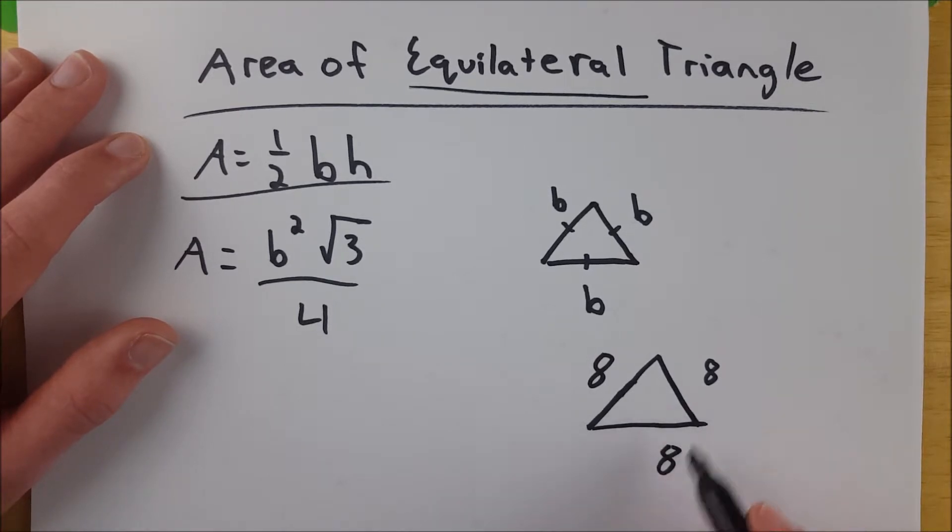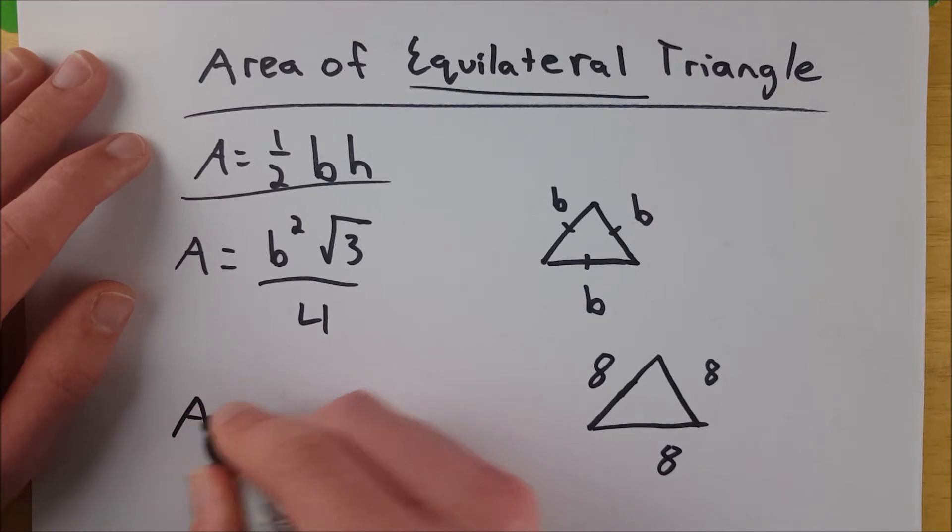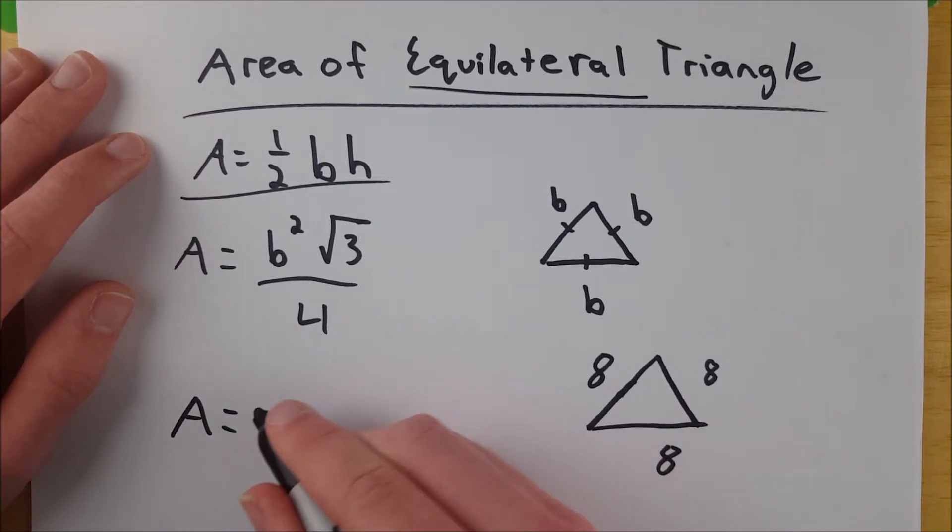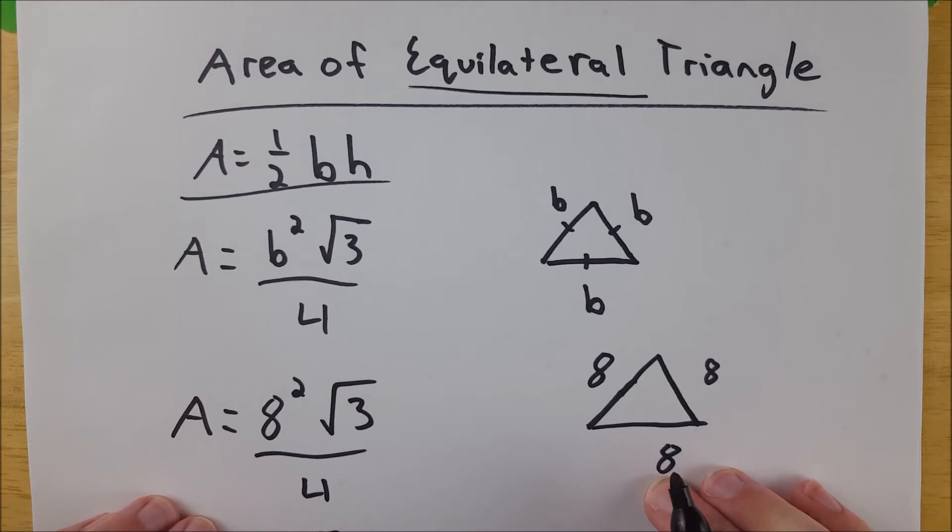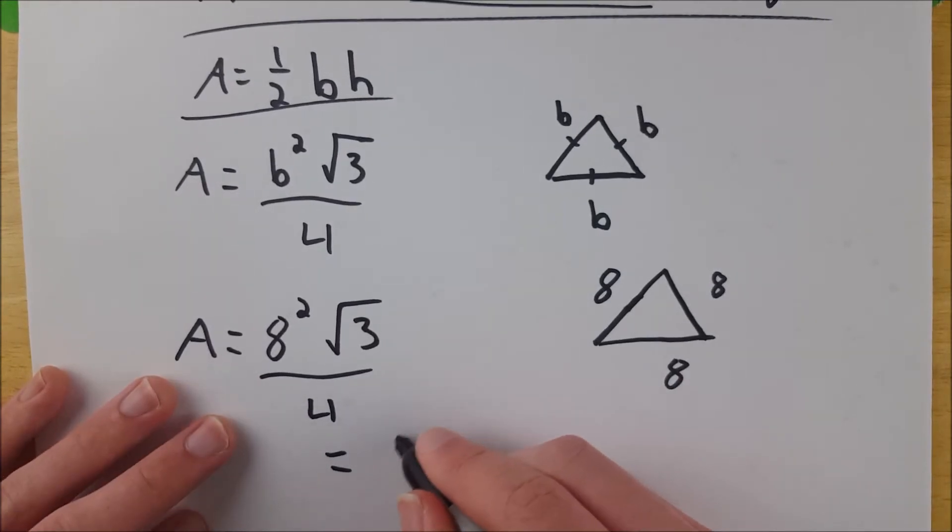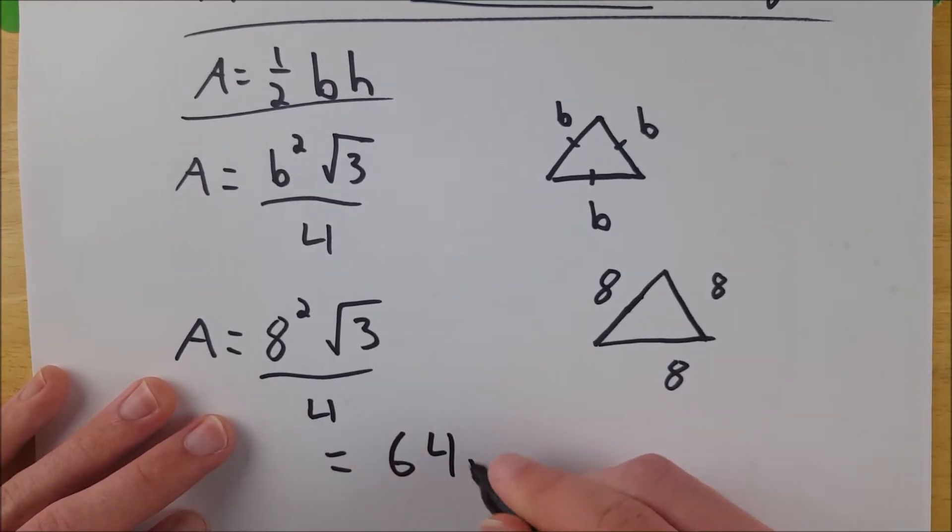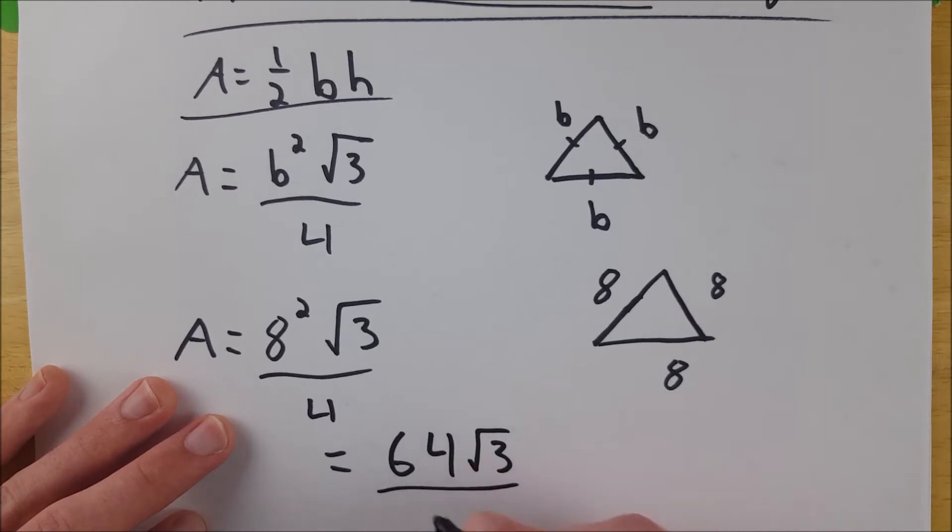Its base length is eight on whichever base you look at. So the area is eight squared multiplied by the square root of three, divided by four. That equals 64 multiplied by the square root of three, divided by four.